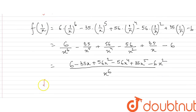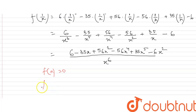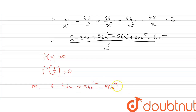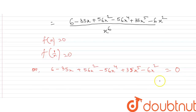Since f(x) equals 0, we can write that 6 minus 35x plus 56x² minus 56x⁴ plus 35x⁵ minus 6x⁶ equals 0, because x⁶ in the denominator is cancelled by x⁶.